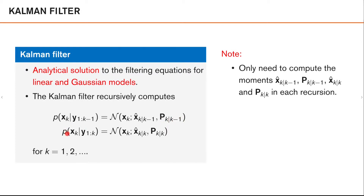Secondly, it calculates the posterior density — the distribution of x_k given measurements up to time k. Again, this is also computed as a Gaussian density, with a mean x-hat k given k, and covariance P_k given k. And this is done for all k's from 1, 2, 3, 4, and so on.